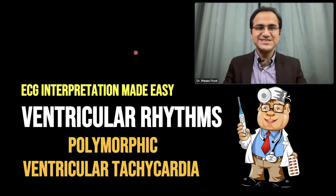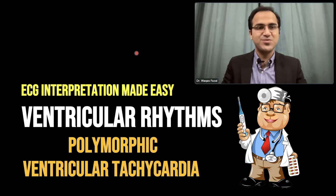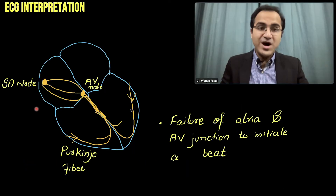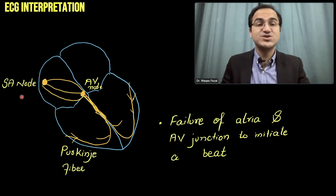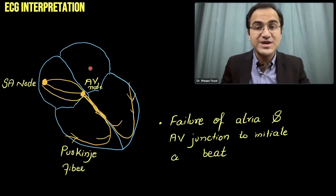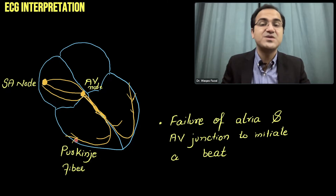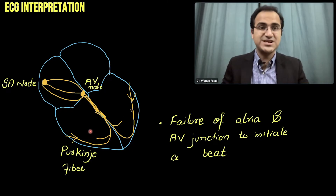In our video series of ECG interpretation made easy, in this video we are going to talk about ventricular rhythm, polymorphic ventricular tachycardia, and torsades de pointes. The electrical activity of the heart is controlled by the SA node. The SA node produces electrical currents that spread throughout the atria, causing contraction. These signals travel through the internodal pathways to the AV node, then to the bundle branches and Purkinje fibers, resulting in contraction of the ventricles.